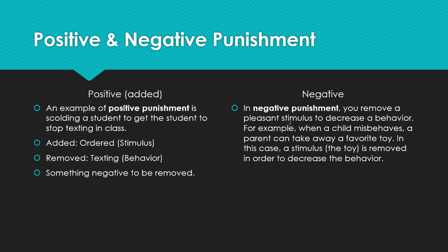In negative punishment, you remove a pleasant stimulus to decrease behavior. Here you are not removing a bad thing — you are removing a good thing. For example, when a child misbehaves, a parent can take away a favorite toy, decreasing the undesired behavior. Or you tell your child: 'Don't make noise, otherwise I will not take you to the park or the mall.' This pleasant stimulus is removed to decrease the behavior.